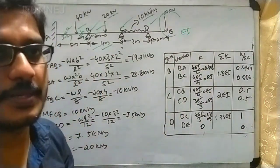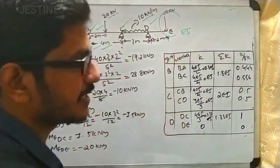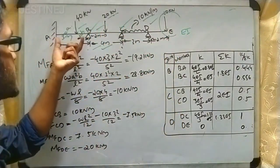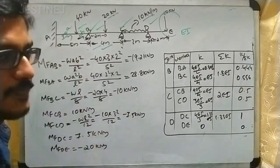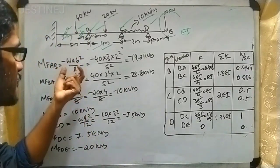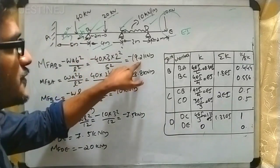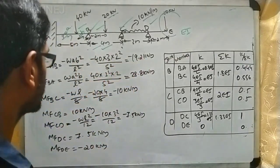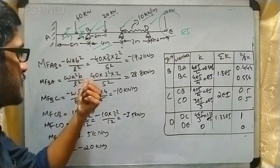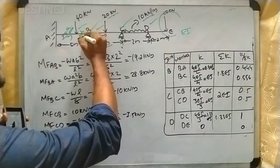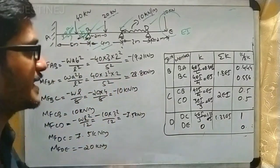The first step is to find the fixed end moments by fixing each part: AB, BC, CD, and DE. For the AB span, 40 kN acts at 3 meters and 2 meters from each support, so it is not at the center. Using M_AB = -Wab²/L², substituting values gives -19.2 kN·m. For M_BA, using Wa²b/L² where a = 3 m and b = 2 m, the result is +28.8 kN·m.